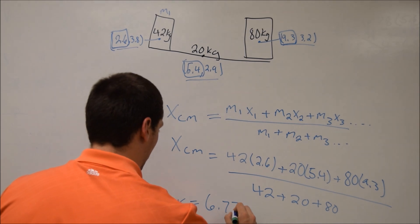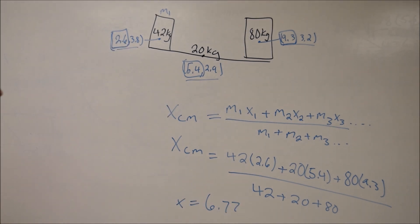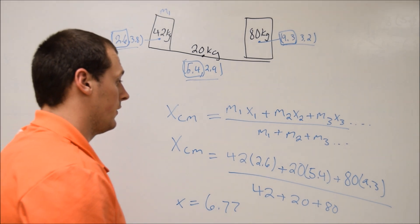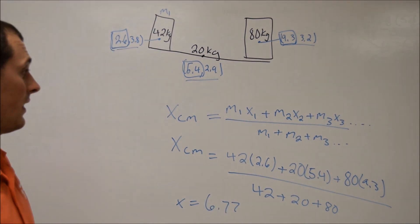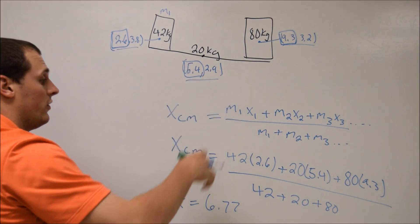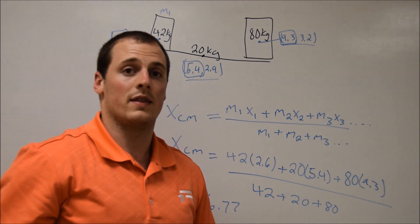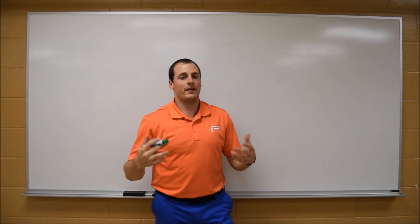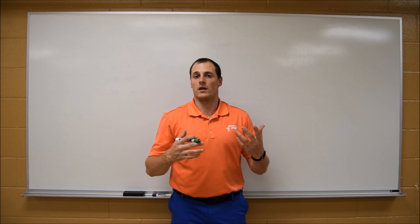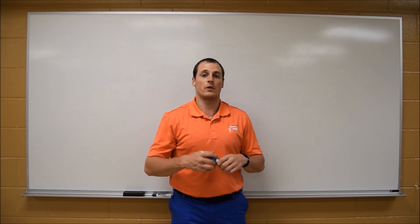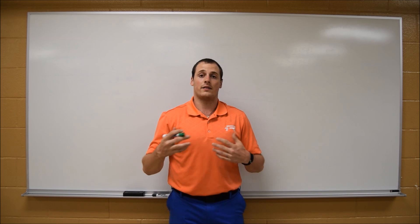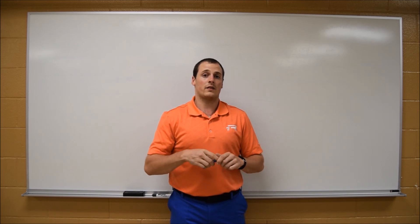Doing that math gives an x center of mass of 6.77. For the y center of mass, do the exact same thing: take each mass times its y-location, sum them, and divide by the total mass. Note that center of mass values will always be in some unit of length — meters, centimeters, kilometers, etc. That wraps up torque, moment of inertia, angular acceleration, and center of mass. See you guys next week.